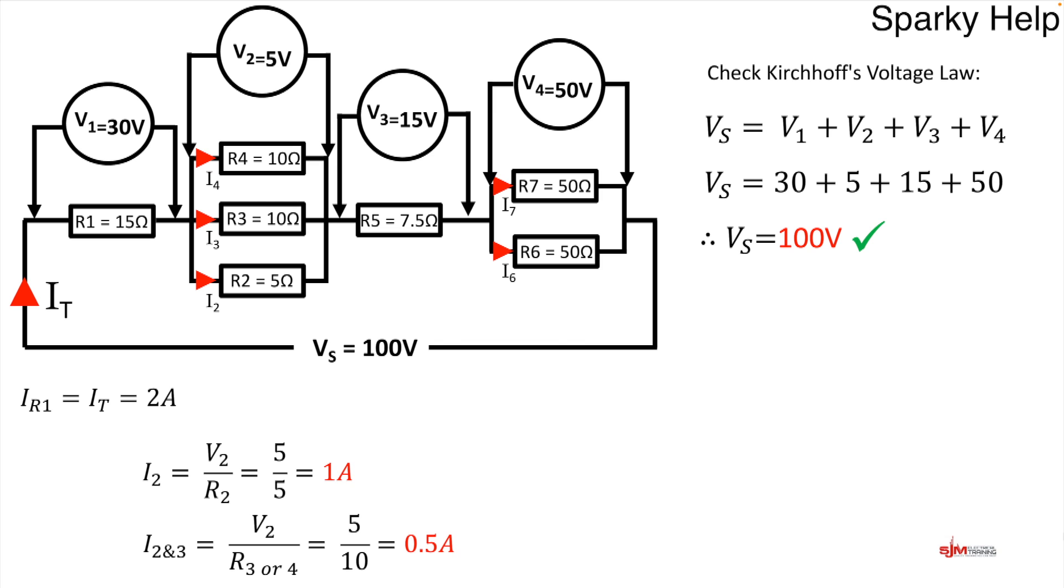How do we just check that? It's V2 divided by R3 or R4, whichever you wish. But they're going to be the same. So 5 divided by 10 gives half an amp. So 0.5 an amp or 500 milliamps goes through R3 and R4. When it comes out the other side Kirchhoff's current law will apply. So we have I2 plus I3 plus I4 should add up to 2. And it does. I've kept the numbers nice and simple to help understand.